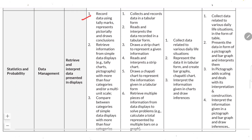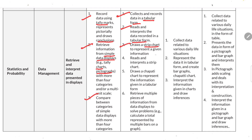For Statistics: record data using tally marks; represent data pictorially and draw conclusions. Retrieve information from simple data displays like charts and pictorial graphs. Compare between categories of simple displays with more than four categories. Collect and record data in tabular form; read and interpret tabular data. Draw a strip chart to represent given information; read and interpret a strip chart. Draw a pie/chapati chart to represent information. Retrieve multiple pieces of information from data displays to solve problems.